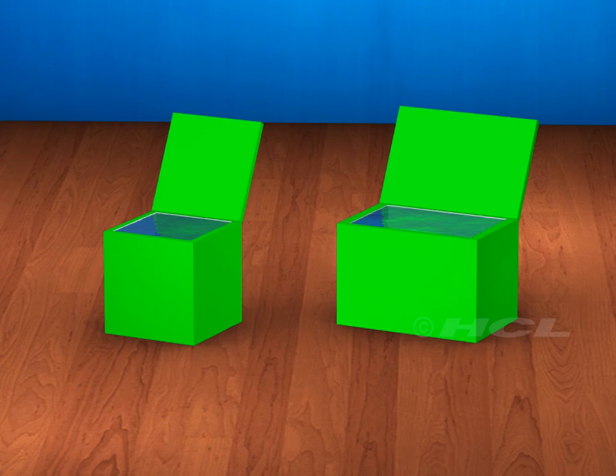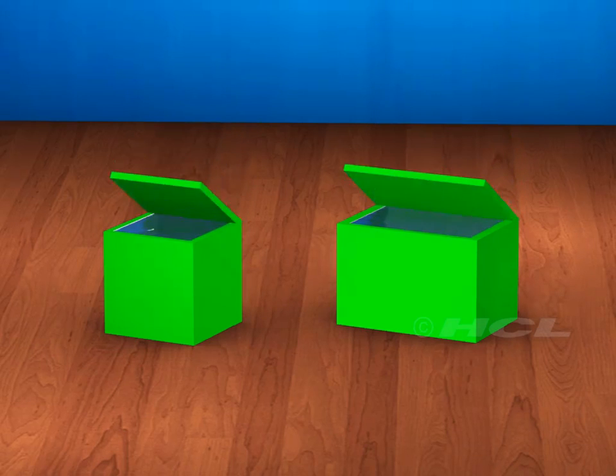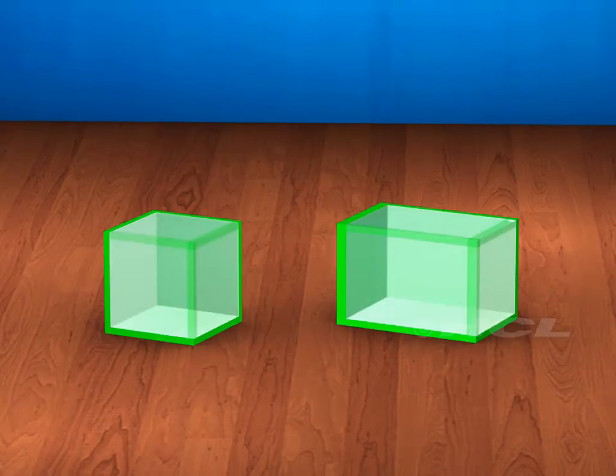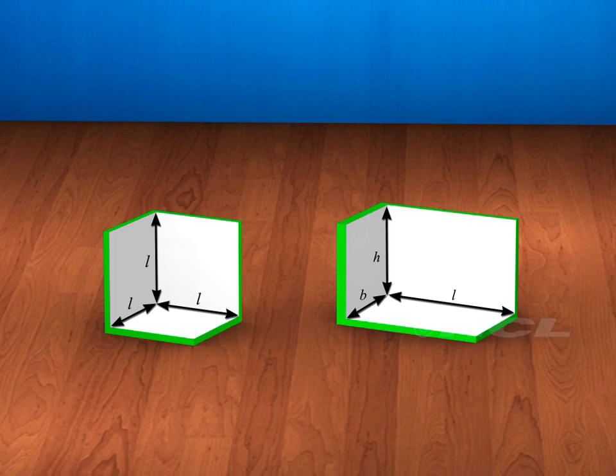So the volume of an object is the measure of the space it occupies, and the capacity of the object is the volume of substance its interior can accommodate. That means the capacity of a three-dimensional object is its inner volume.